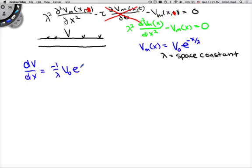The second derivative, just take the derivative again. A minus 1 over lambda times minus 1 over lambda is just going to be 1 over lambda squared. The minuses will cancel: V naught e to the minus x over lambda.